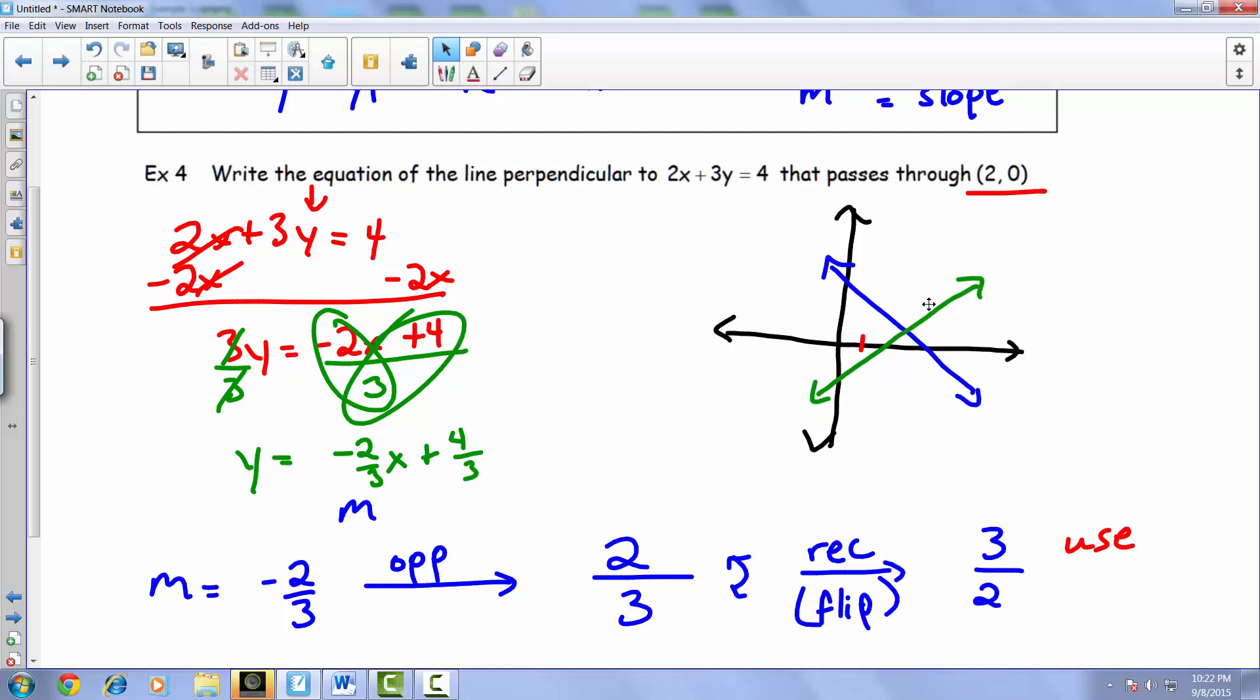As a result, there is a specific line with the same slope three-halves—it's not changing—but it has a specific y-intercept that we need. There is a specific line that would satisfy both of these conditions and passes through that point (2, 0).